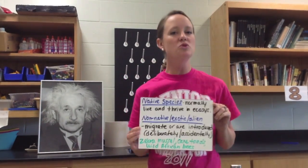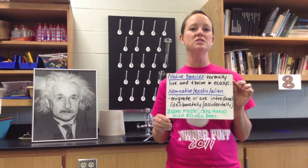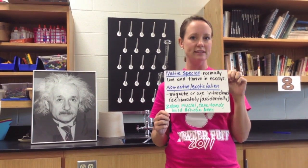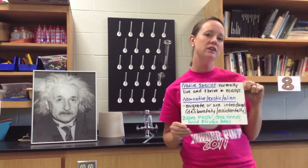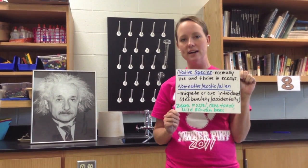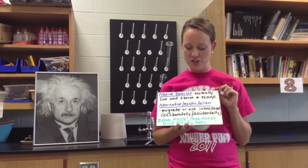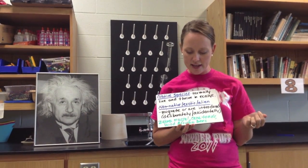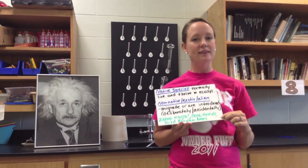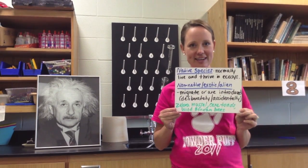Species that normally live and thrive in an ecosystem are called native species. Those that are introduced either accidentally or on purpose by humans, or migrate into an area, are known as non-native — you'll also see them called exotic or alien species. Some examples we'll look at in case studies later are the zebra mussels in the Great Lakes, the wild African bees, and the cane toads.